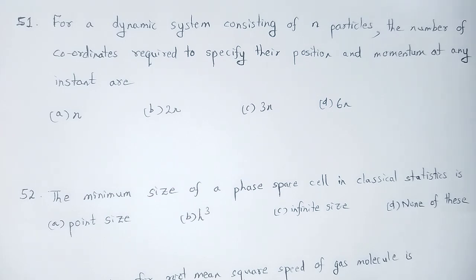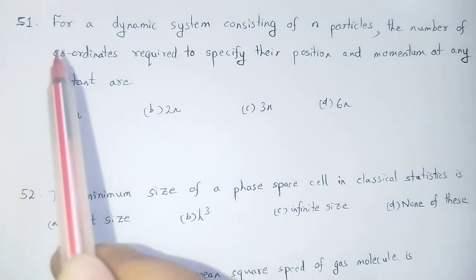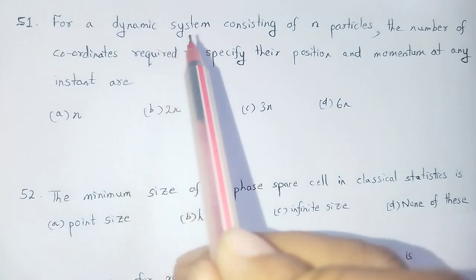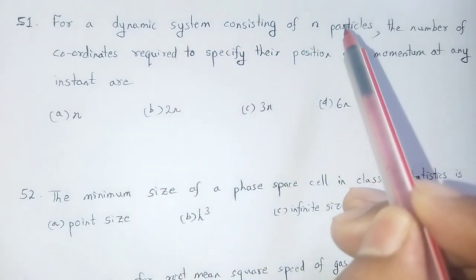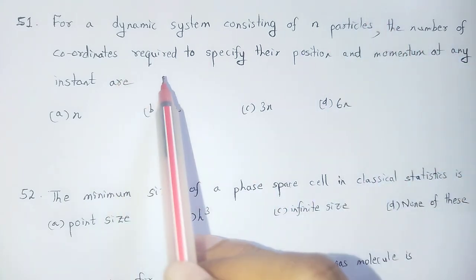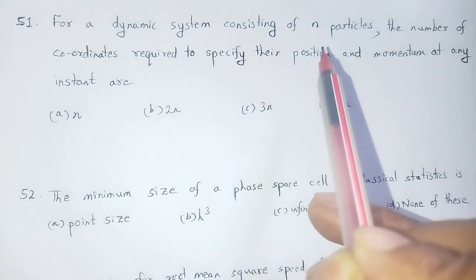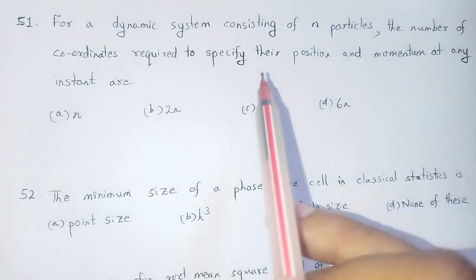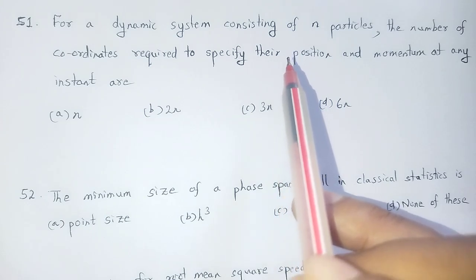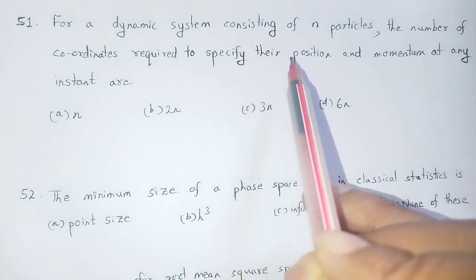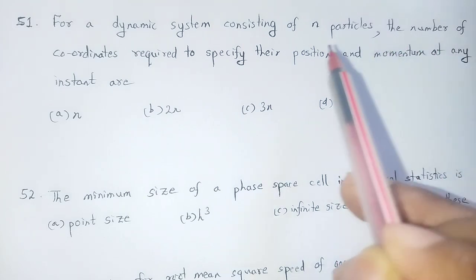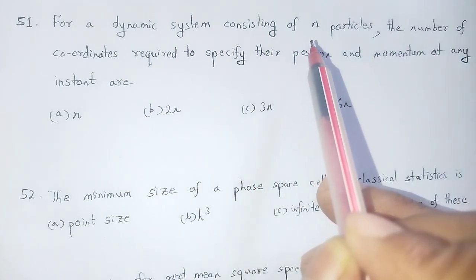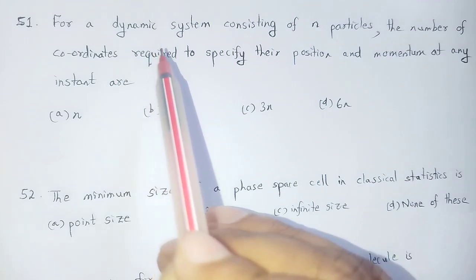Now we will discuss statistical mechanics questions. Question number 51: For a dynamic system consisting of n particles, the number of coordinates required to specify their position and momentum at any instant.